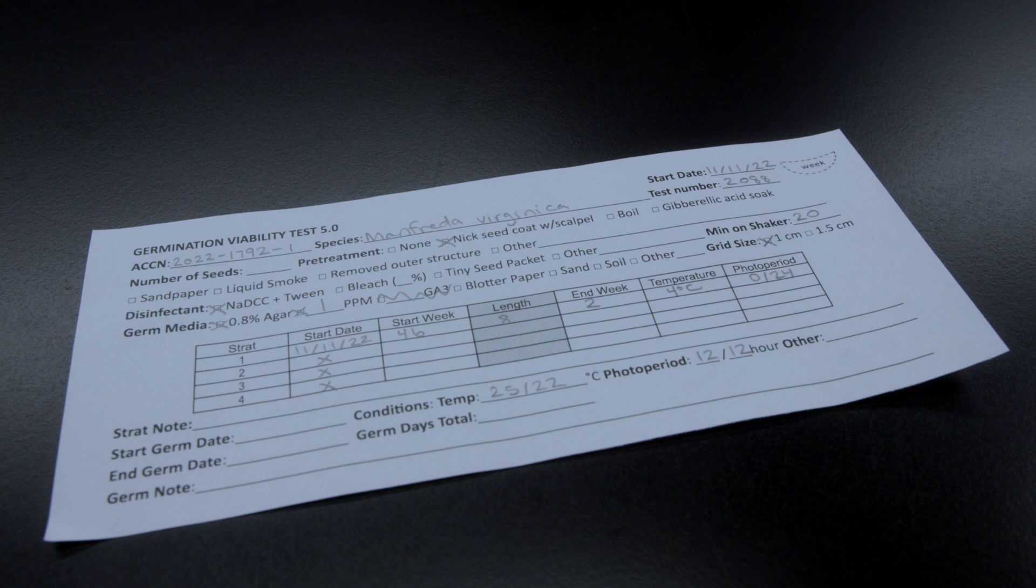After I've decided how I want to run the test, a score sheet is filled out. We've found that having a physical copy that stays with the test is really helpful. It's pretty self-explanatory. There's a space for a session number, taxon, and test number at the top.